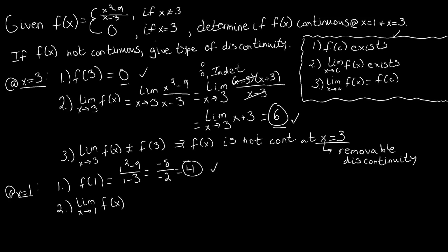So the limit as x approaches 1 of f of x is simply the limit as x approaches 1 of x squared minus 9 over x minus 3. And if we pass to the limit here, we see that we're going to get similar work as to what we just did up here. We're going to get 1 squared minus 9 over 1 minus 3, where that's going to evaluate to be 4 again. And so we say again, step 3 kind of gets satisfied in that fashion.